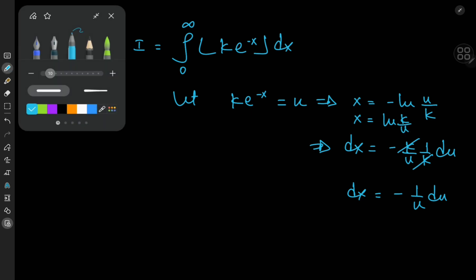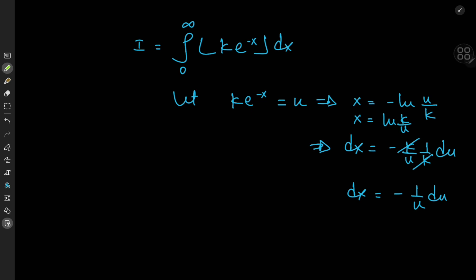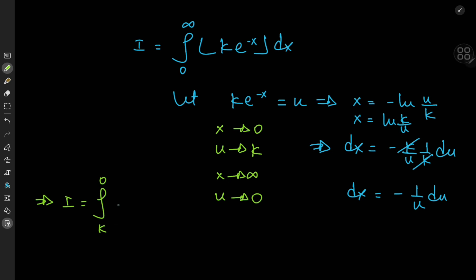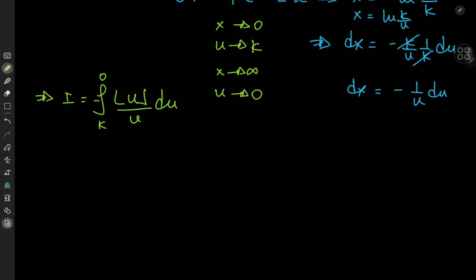Now, what about the limits of integration? As x tends to 0, u approaches k. And as x approaches infinity, u approaches 0. All of this implies that the integral becomes the integral from k to 0 of floor(u) times negative 1 over u, du, which we can rewrite as the integral from 0 to k of floor(u) over u, du.